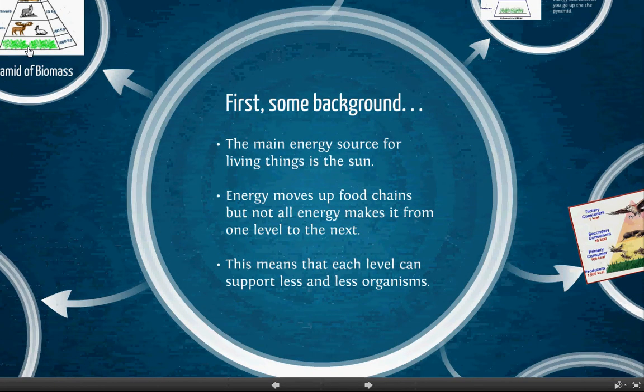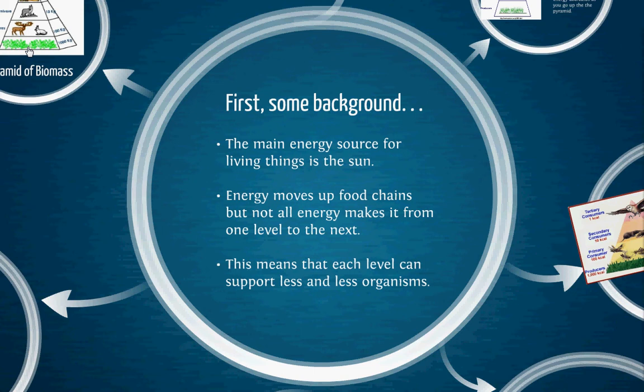First, a little bit of background. Most of you guys probably remember this. The main source of energy on planet Earth is from the sun, at least when we're talking about biological processes. Energy moves up food chains, but not all energy makes it from one level to the next. That's why we use little arrows to go from grass to rabbit to wolf, and the arrow is always pointing toward the mouth that is eating it because that's the way the energy flows. But every single bit of energy from that grass does not make it to the rabbit, and every single bit of energy from the rabbit does not get used by the fox, and this means that each level supports less and less organisms overall in most cases.